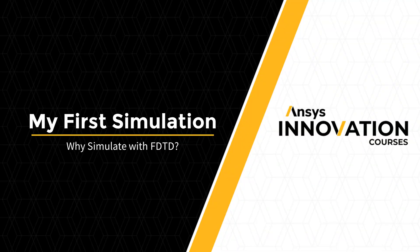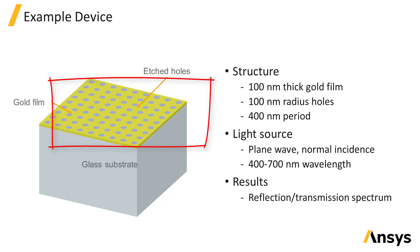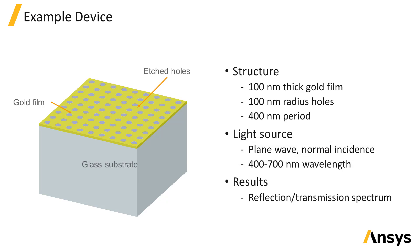Consider the nano-hole array illustrated here. The structure is made up of a glass substrate with a thin film of gold on top. A rectangular pattern of holes is etched into the gold layer. We're interested in obtaining the reflection and transmission spectrum of plane wave light at normal incidence from the air above the structure, over the visible spectrum from 400 to 700 nanometers.